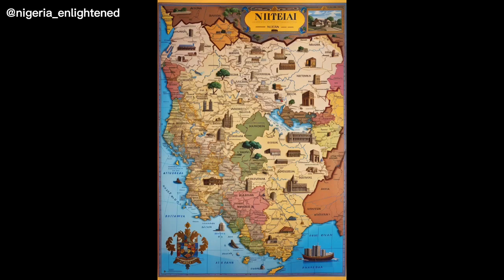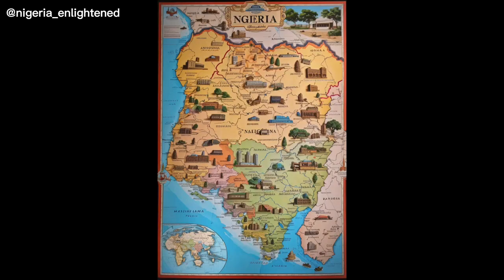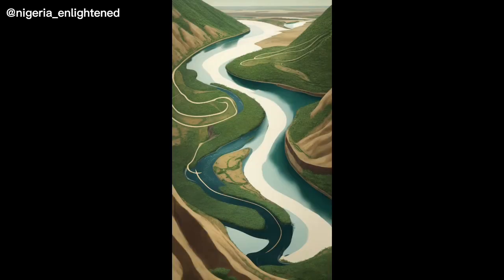Nigeria is bordered by four other countries: Benin to the west, Niger to the north, Chad to the northeast, and Cameroon to the east. It also has a coastline along the Atlantic Ocean to the south.